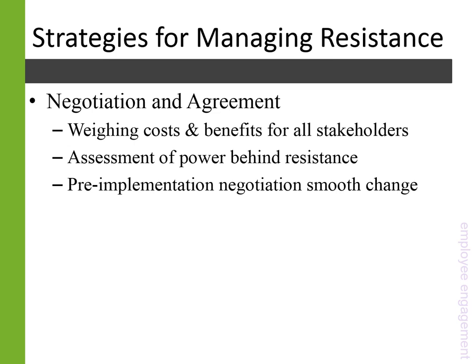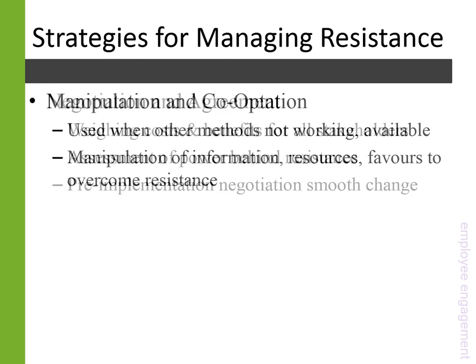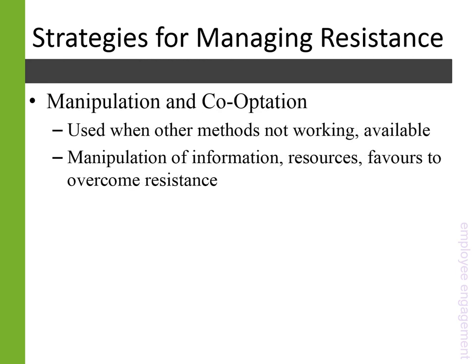However, there are three more strategies that can be less pro-social. When we look at these, we begin with manipulation and co-optation of concerns. This is ethically dubious and can often backfire, but is sometimes used when other methods haven't worked or aren't available due to time or circumstance. It involves manipulating the information available, resources, or using favors to try and overcome resistance. There are a lot of gray areas associated with manipulation, and it often leaves people with a really negative feeling about the situation, which is why it could be effective but isn't recommended.